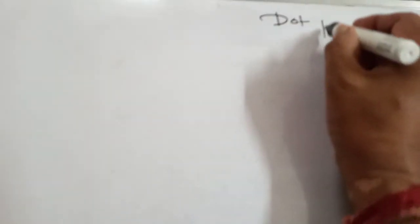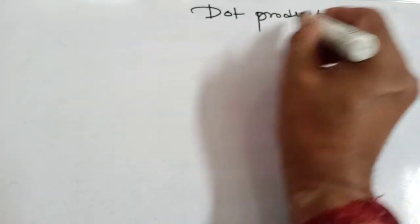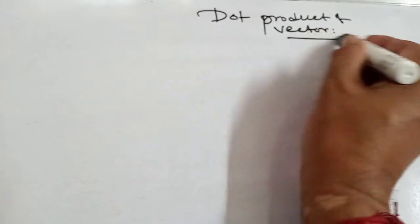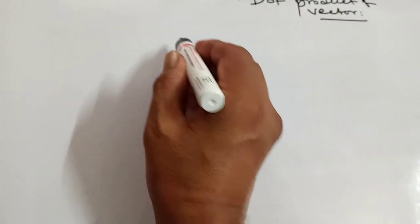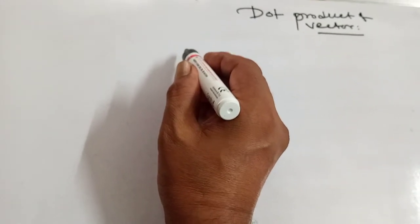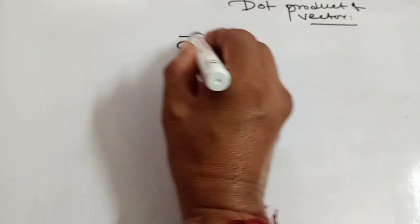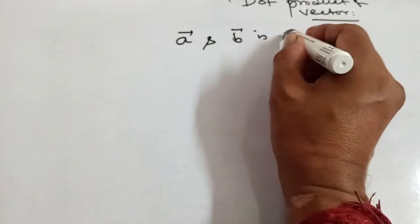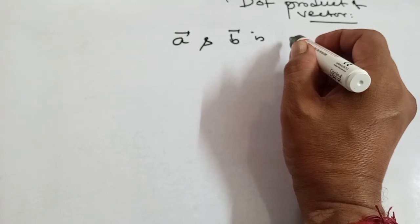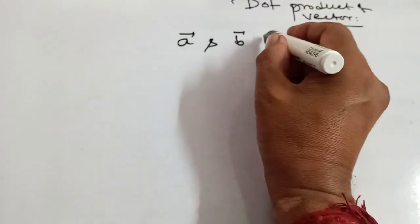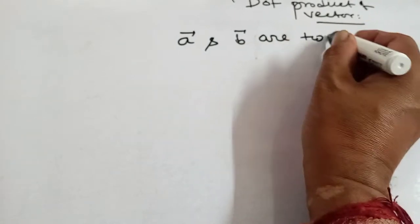Dot product of vectors. Given that a and b are two vectors.